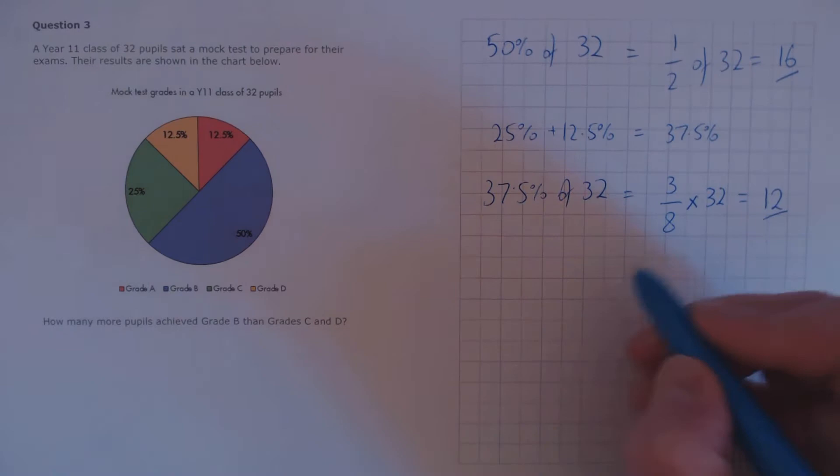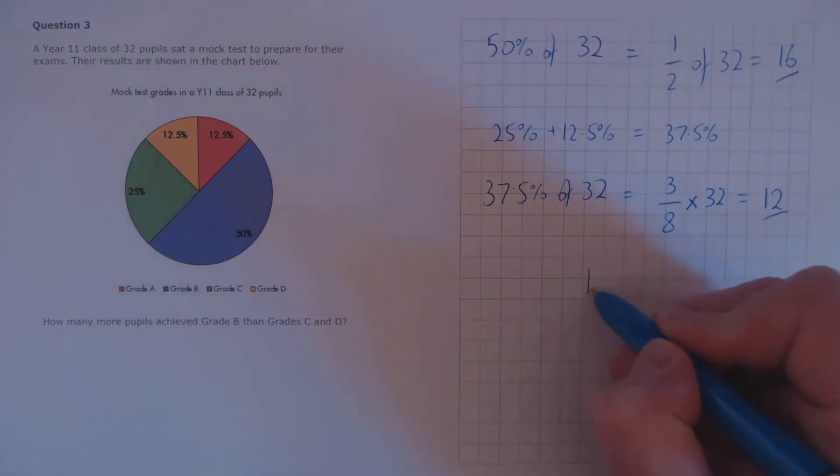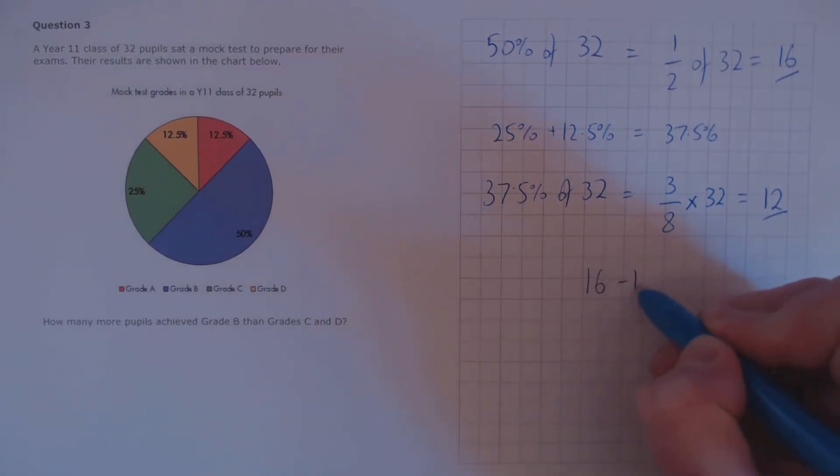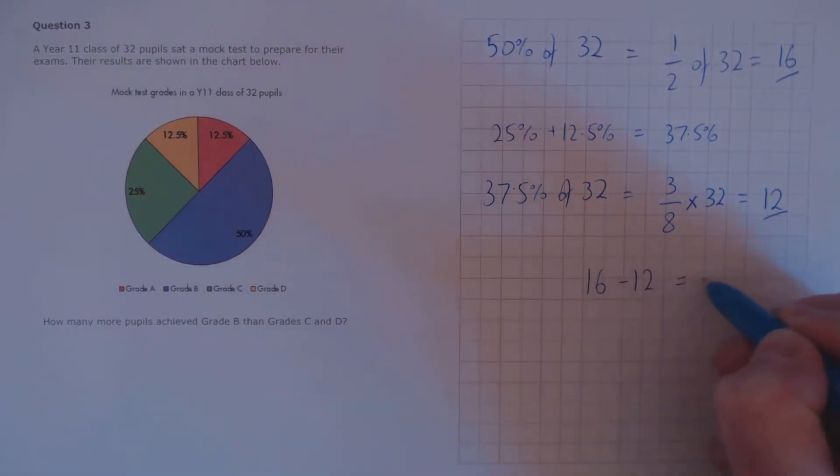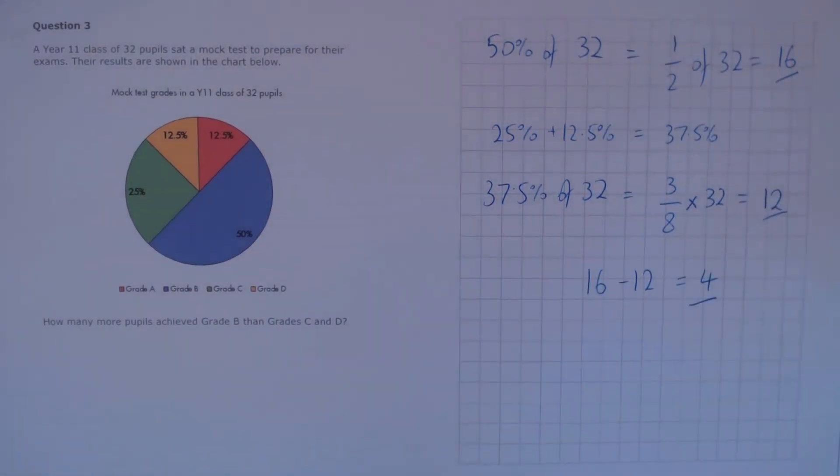Finally, we just need the difference between these two values. 16 minus 12 is 4 more pupils.